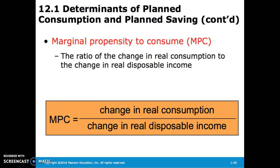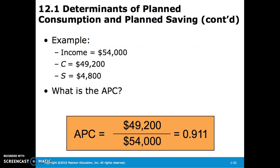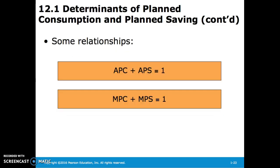The marginal propensity to consume is the ratio of the change in real consumption to the change in real disposable income. As an example, consider an income of $54,000 with consumption of $49,200 and savings of $4,800. The average propensity to consume equals $49,200 divided by $54,000, which equals 0.911. Since you can either consume or save, the average propensity to consume plus the average propensity to save equals 1. Likewise, the marginal propensities are also equal to 1.